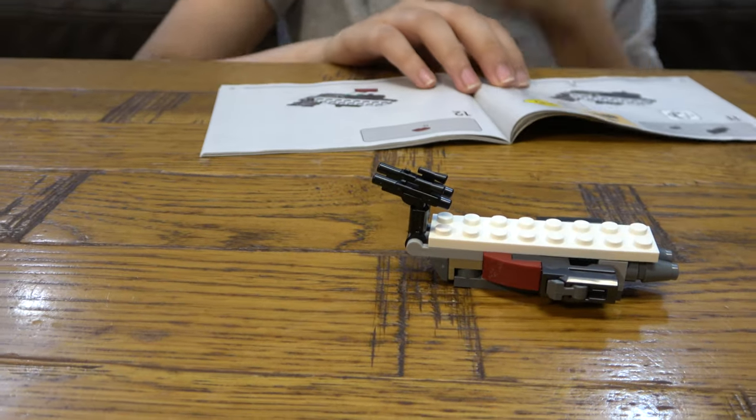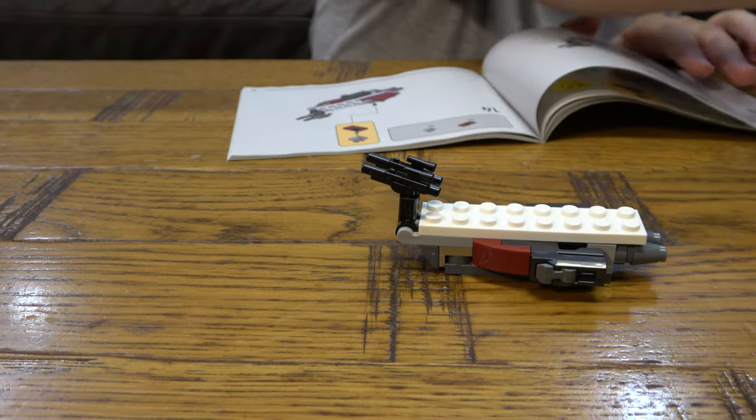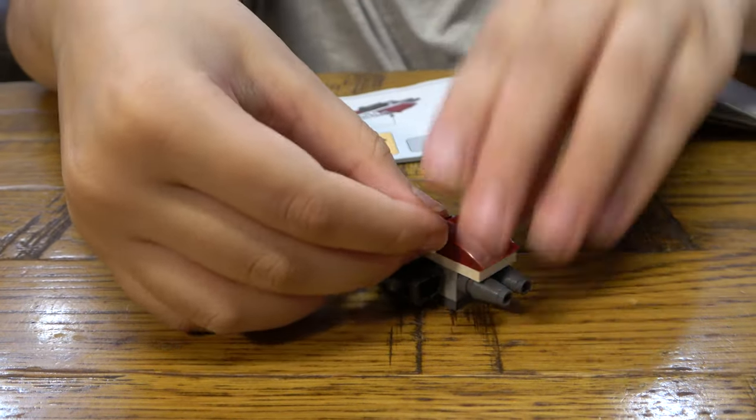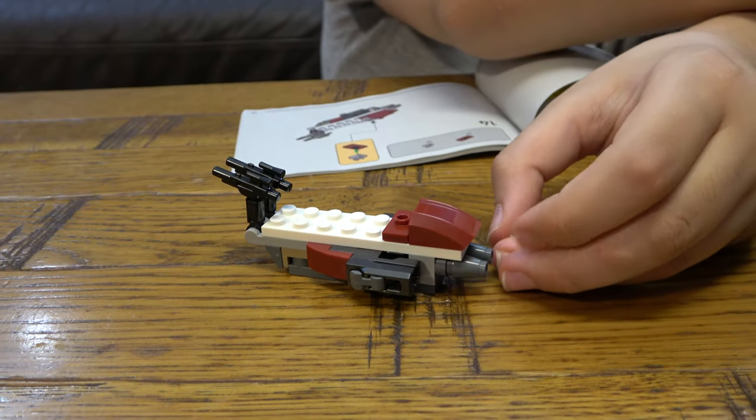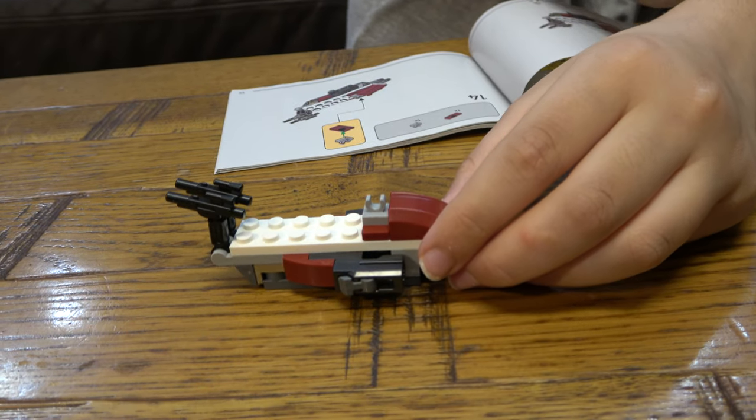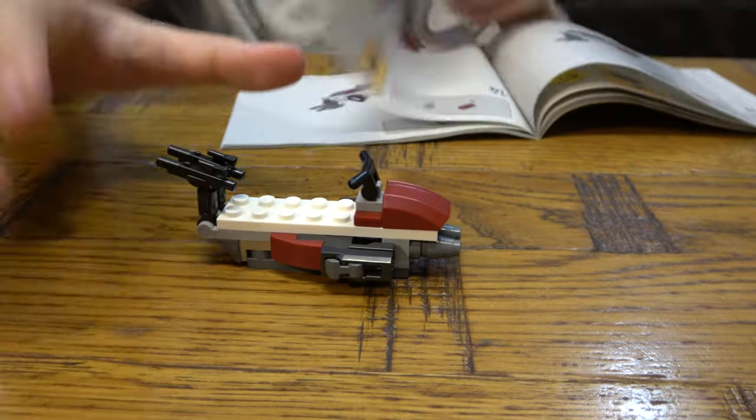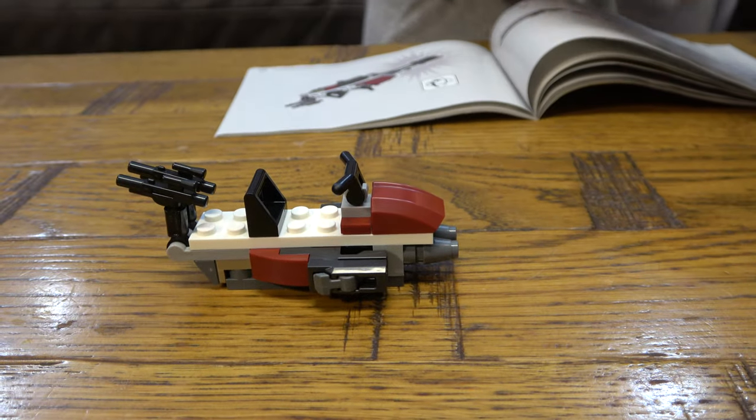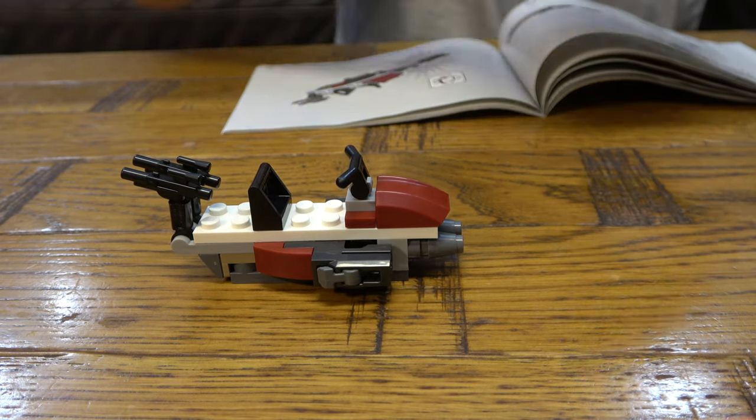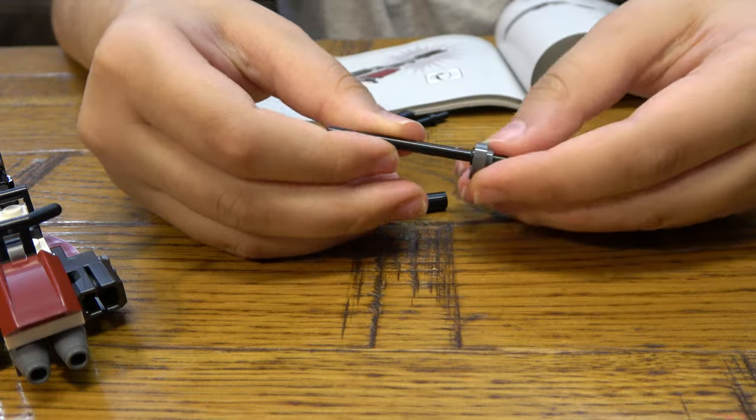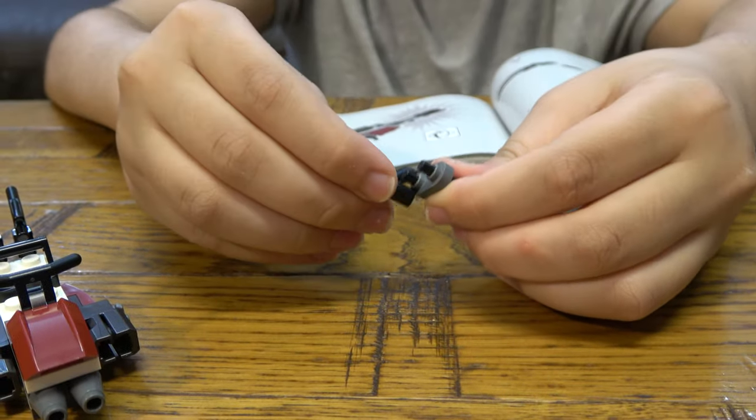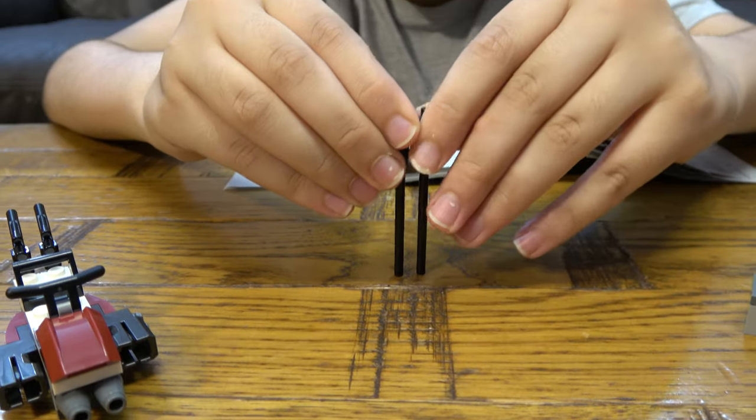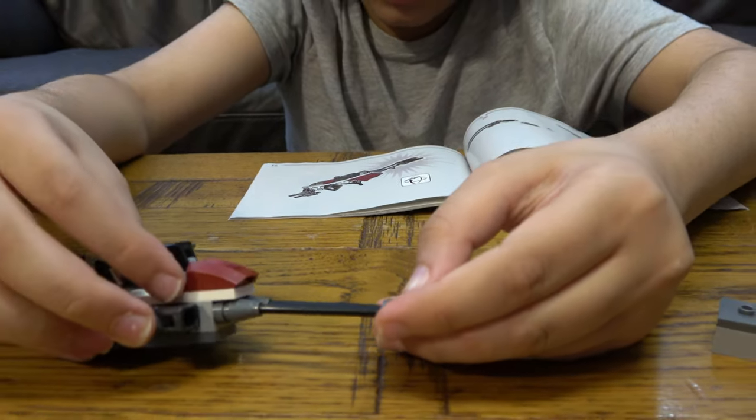Like so, and then we are going to do the same on the other side. Then we're going to place this here, like that. So then we're going to place this here, and I think that's the finished - oh wait, no, we are almost finished with the speeder bike.